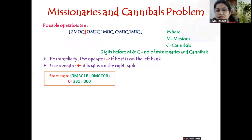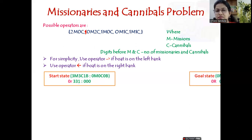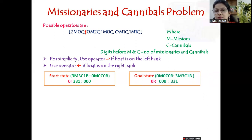The start state is three missionaries, three cannibals, and one boat on the left bank. Initially on the other bank: zero missionaries, zero cannibals, and zero boat. This initial configuration is represented in short as 331 (missionaries, cannibals, boat) on the left, and 000 on the right. The goal state is when all missionaries and cannibals — along with the boat — have reached the right bank, leaving nobody on the left. This is represented as 000 on the left and 331 on the right.